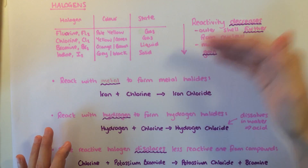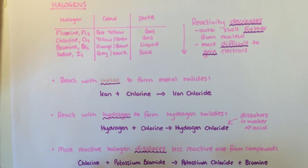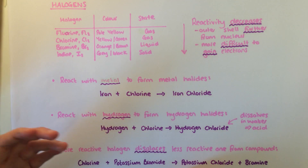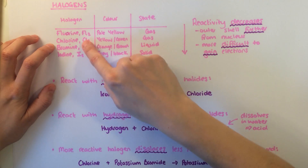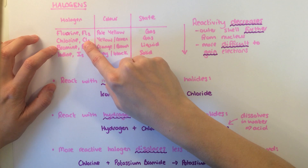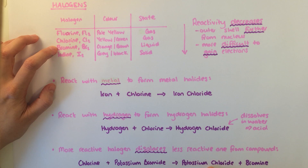The relative reactivity of the different elements can be demonstrated by displacement reactions. A more reactive halogen will displace a less reactive one from a compound. For example, if chlorine were to be mixed with potassium bromide, chlorine is more reactive so it will displace the bromine from the compound, leaving potassium chloride and bromine on its own.